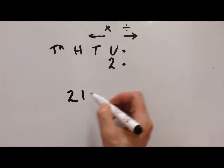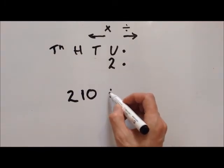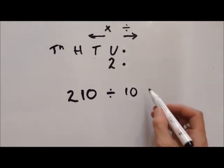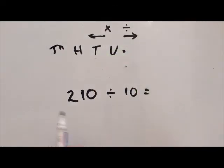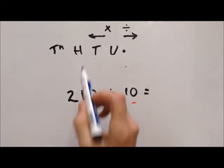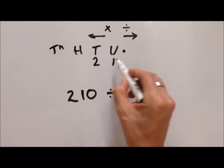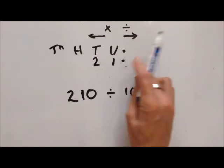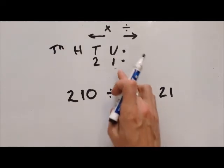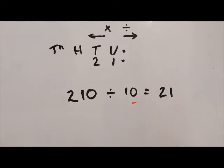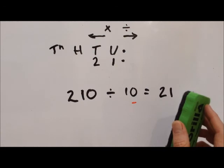Let's do 210 divided by 10. Everything goes to the right. There's one zero on the 10, so it moves right once. The 2 goes here and the 1 goes here — we don't need another zero because we've hit against the decimal point, so that zero vanishes. The answer is 21. It's important to recognise that we're moving across these columns, making the number move, and this is important because of the decimal place.